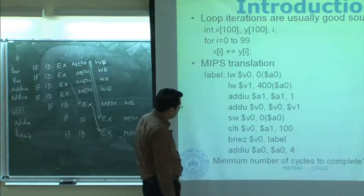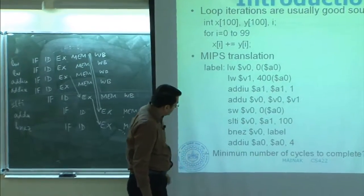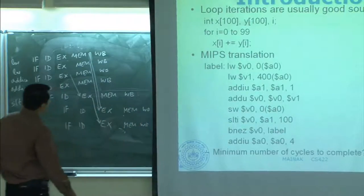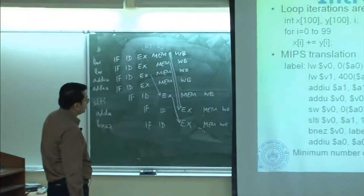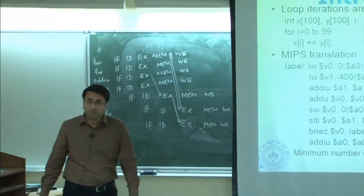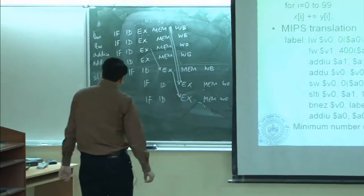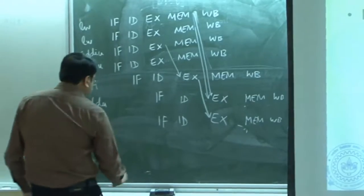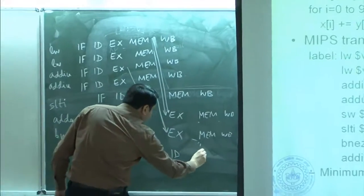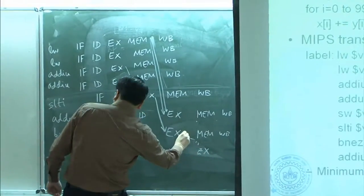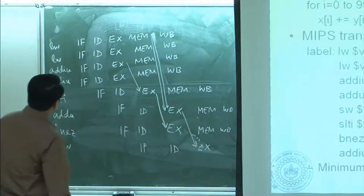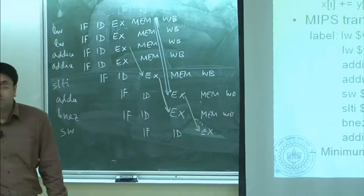What are we left with? We are left with only this one — everything else is done. 1, 2, 3, 4, 5, 6, 7, 8 — yes. We are left with the store, which will now go into the branch delay slot.